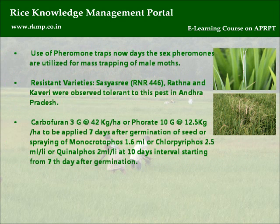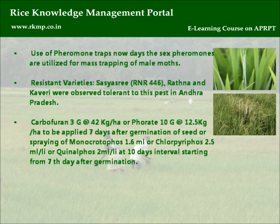Pheromone traps: Sex pheromones are now utilized for mass trapping of male moths. Resistant varieties: Sasyasri, RNA-446, Ratna, and Kaveri were observed tolerant to this pest in Andhra Pradesh. Apply Carbofuran 3G at 42 kg per hectare or Forate 10G at 12.5 kg per hectare, 7 days after germination of seed, or spray Monocrotophos 1.6 ml, Chlorpyrifos 2.5 ml, or Quinalphos 2 ml per litre at 10-day intervals starting from the 7th day after germination.